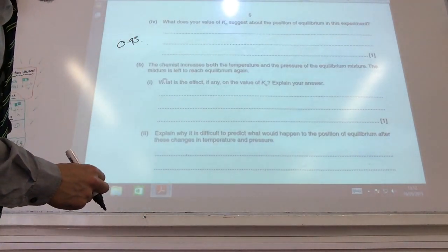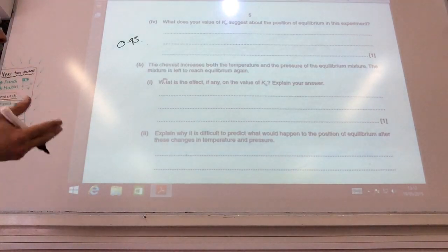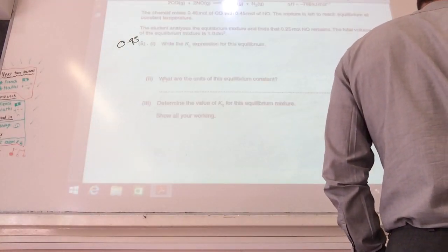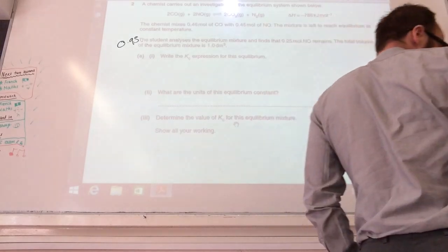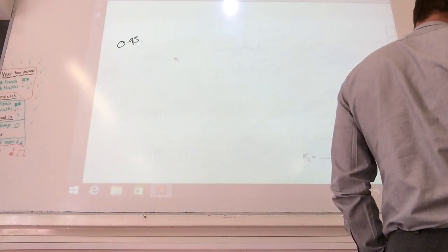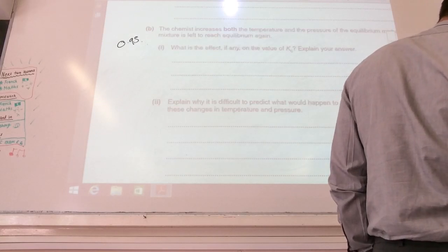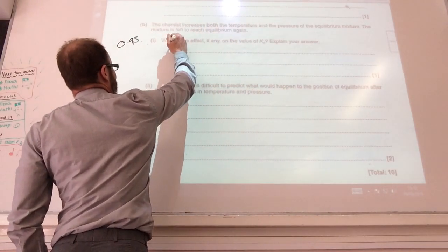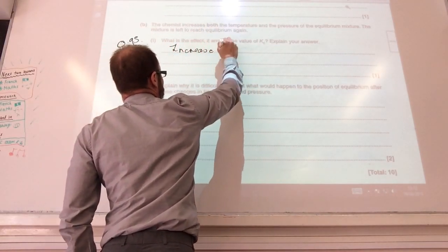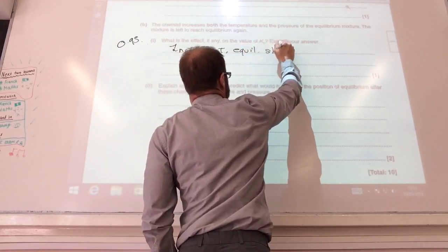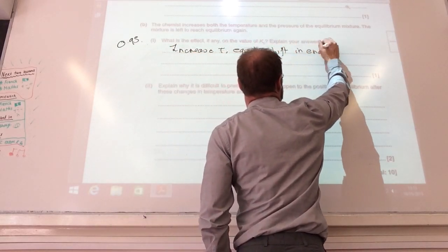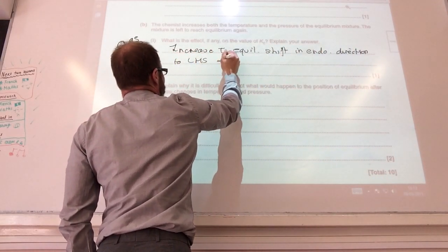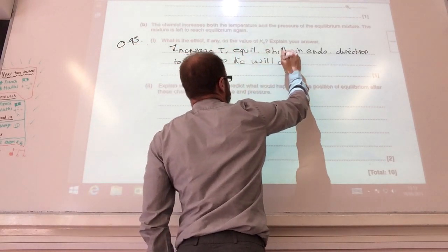So what is the effect of temperature on Kc? The chemist increases both the temperature and the pressure. Remember pressure does not affect Kc at all. If we go back you will note it's actually an exothermic reaction up there. So if it's exothermic that means that the equilibrium will shift to the left hand side. So an increase in temperature, the equilibrium will shift in endothermic direction which is to the left hand side, and therefore Kc will decrease.